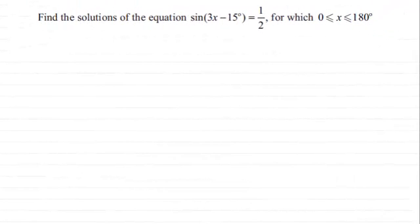Hi. Now here we have an example on solving a trigonometric equation. We've got to find the solutions of the equation sine of 3x minus 15 degrees equals a half, for which x is greater than or equal to 0 degrees but less than or equal to 180 degrees.